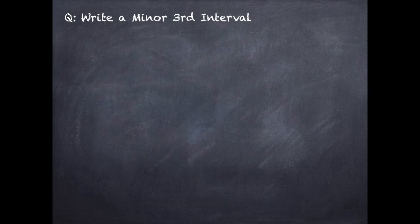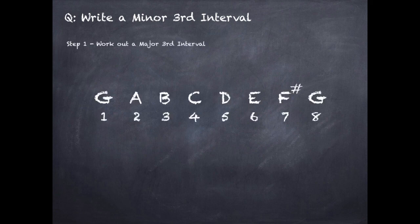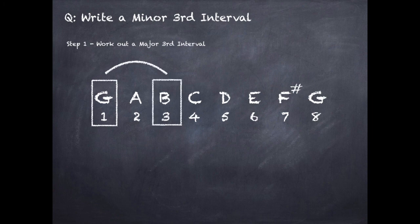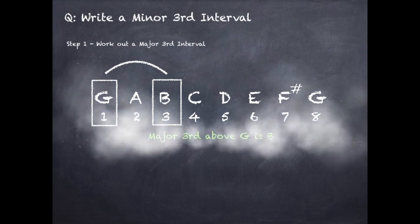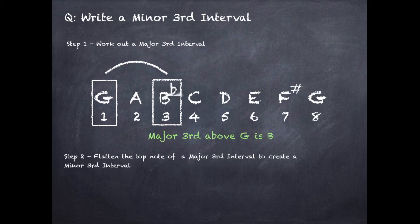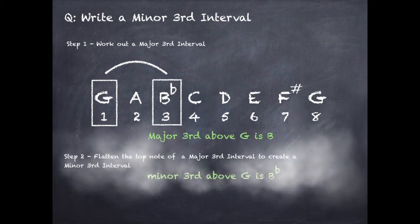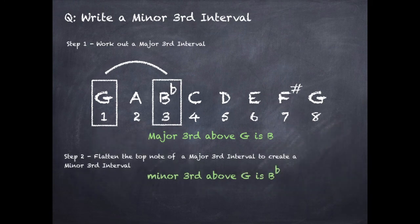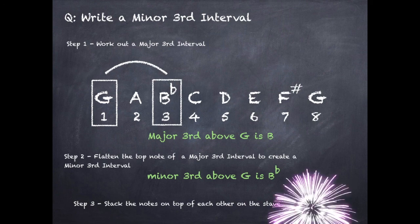To write a minor third interval: step one, work out the major third — from G to B. Step two, flatten the top note: B becomes B flat, so a minor third above G is B flat. Step three, stack the notes on top of each other on the stave.